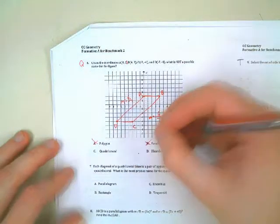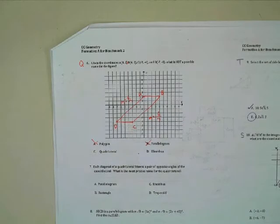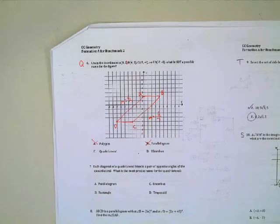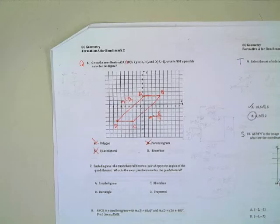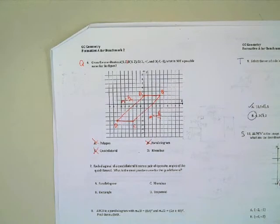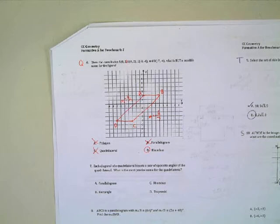So it can't be B — that is a parallelogram, and we're looking for the thing it is not. Is it a quadrilateral? Yeah, it's a quadrilateral. So again, we can call it a quadrilateral. So then D — it must be rhombus. And why isn't this thing a rhombus? Because not all the sides are equal. That's right.